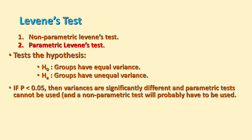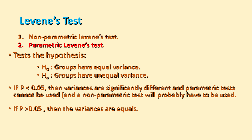If the variances are significantly different, parametric tests like ANOVA or t-test cannot be used and a non-parametric test must be used instead. However, if the p-value is greater than 0.05, we accept the null hypothesis, indicating that the variances are equal from one group to another.